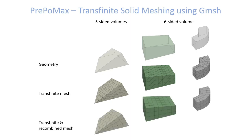It is even more important that after applying a transfinite and recombined constraint we can recombine tetrahedral elements into hexahedral elements. At the end we get very nice hexahedral elements for all five-sided and six-sided volumes. The side surfaces of such volumes may not be only planar but can also be curved, as shown in the third geometry.